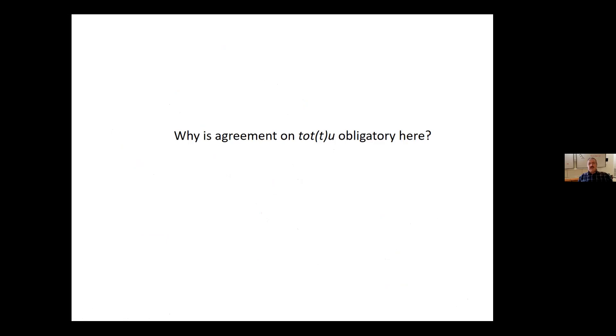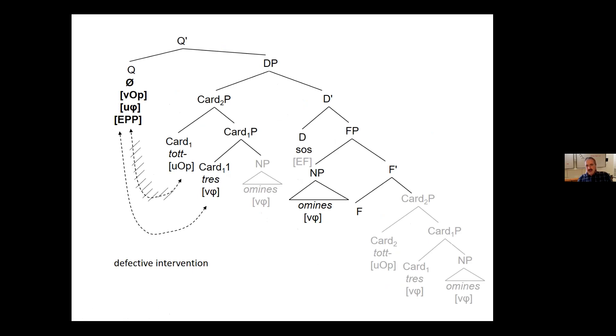Now, to finish, let's ask ourselves, why is agreement now obligatory? Well, this is because if I had inserted the TOTTO without valued, without phi features, so the non-agreeing variant of this quantifier, then this probe here would not find the features of TOTTO because it has no features. It would, of course, find the ones of tres, but there should be a defective intervention here. So if I choose the non-agreeing variant of the quantifier, the derivation would just crash. And this is why agreement is obligatory in this structure.